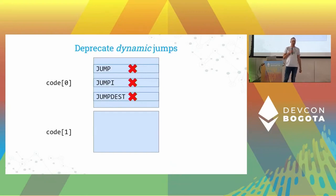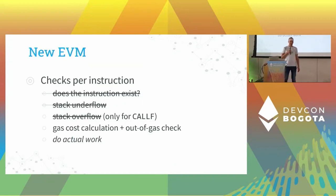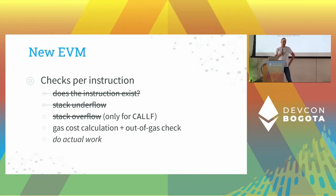Having these two control flow features, we can deprecate the existing jump semantics. In particular, this is really useful because we can drop the jump dest analysis, which currently has to be performed on EVM programs before every execution. Adding all of that together with additional code verification, we can eliminate those first three checks in the EVM.